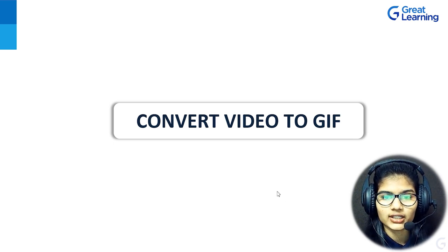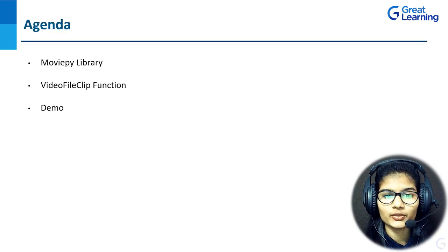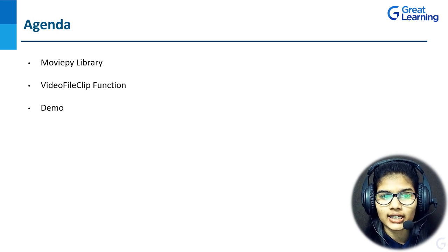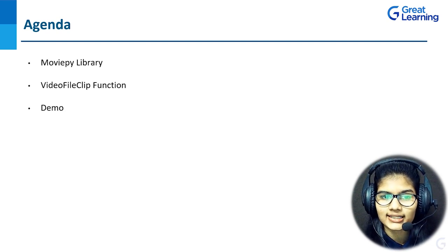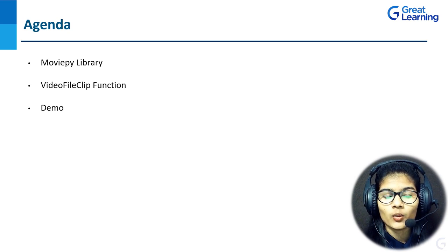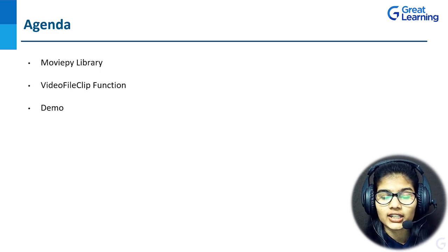Let me take you through the agenda for this tutorial. First, I'll cover the libraries — specifically, I'll be using only one library for converting any video format to GIF: the MoviePy library. PY stands for Python and Movie is the library name. I'll explain what this library is about, its features, and the installation process.